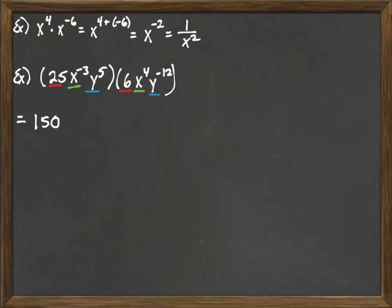25 times 6 is 150. Then we come to x to the negative third, x to the fourth. We use our properties of exponents. We're multiplying, so we add negative three plus positive four, which is positive one. So we have x to the first, or just x. Then we put our y's together. y to the fifth, y to the negative twelfth. Five plus negative twelve is negative seven, so we get y to the negative seven.